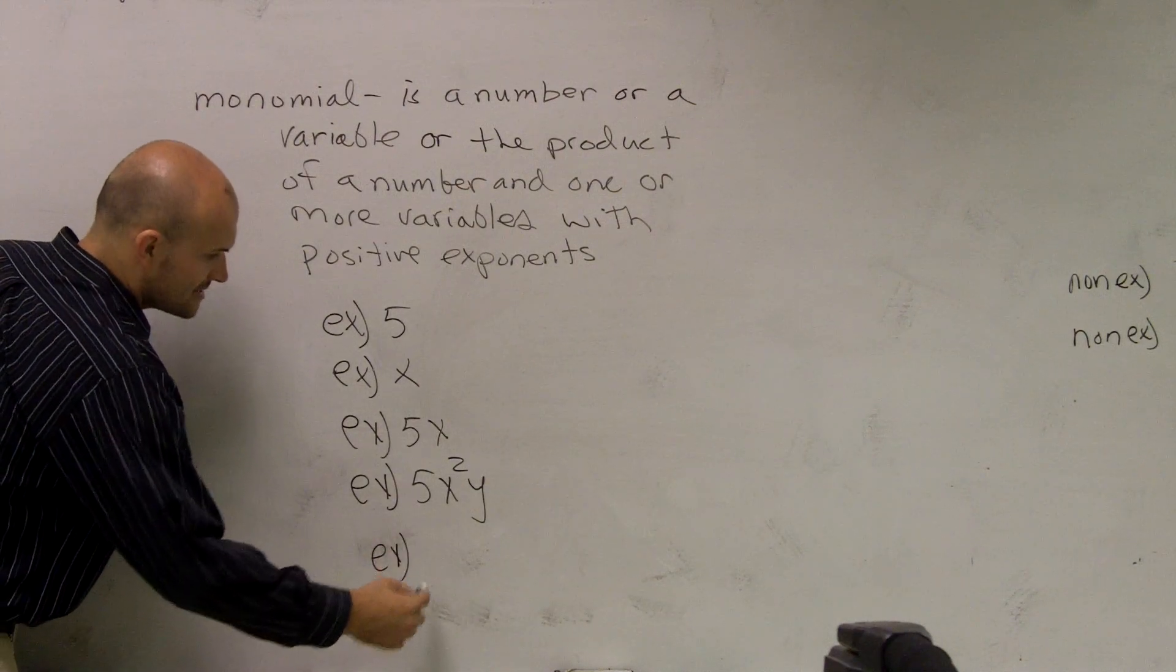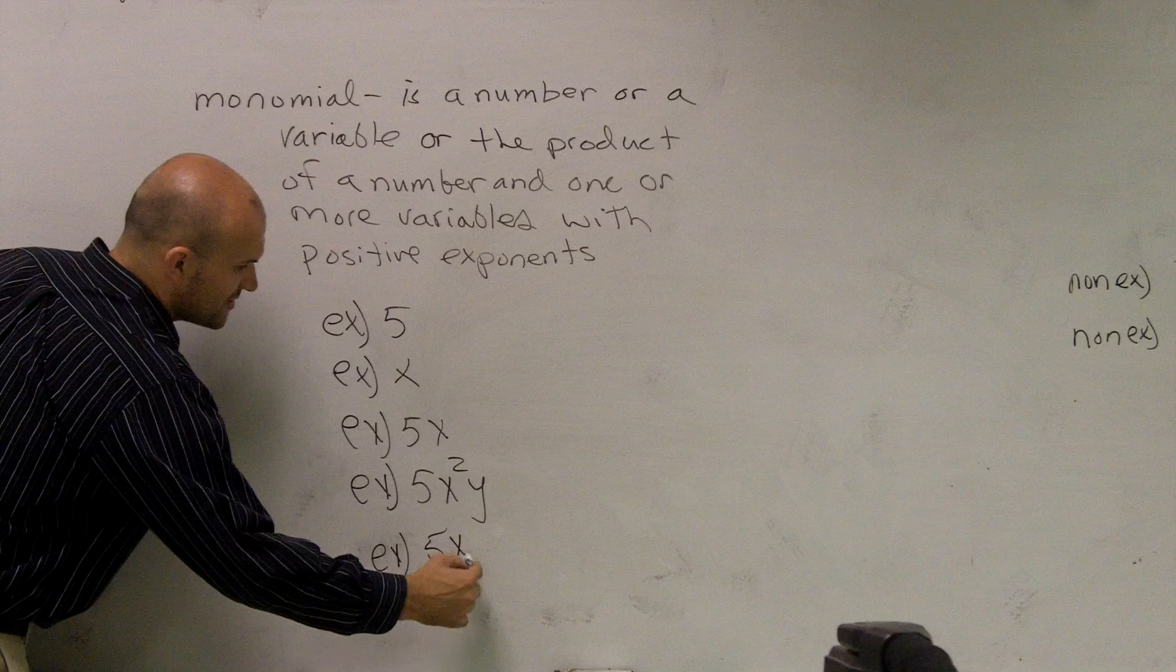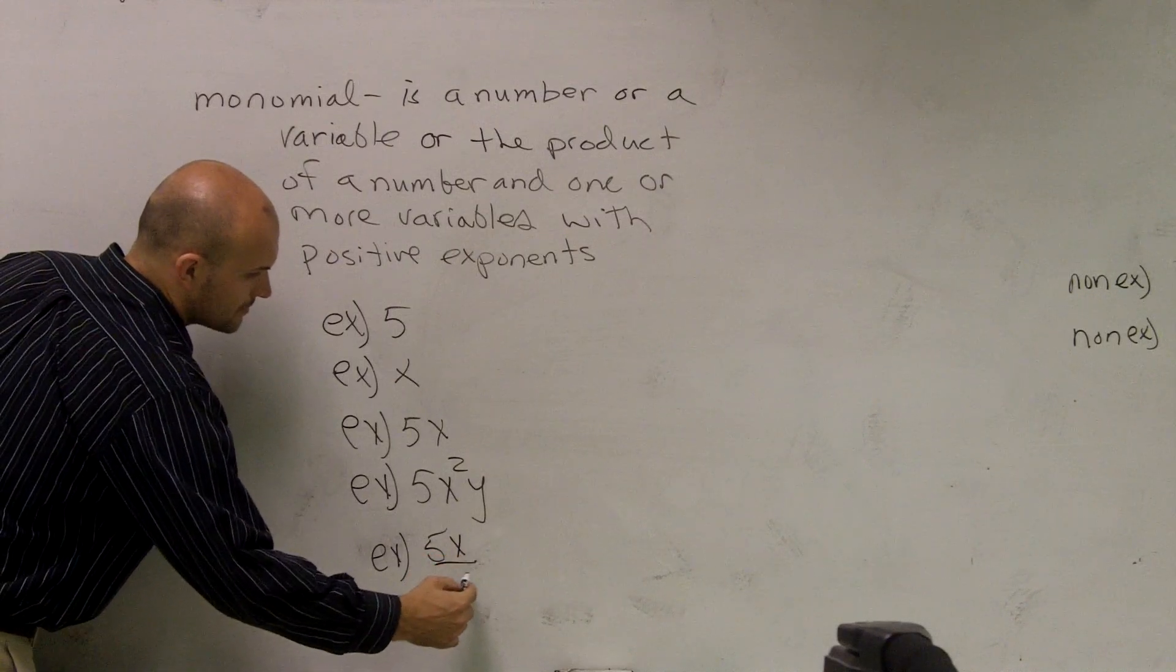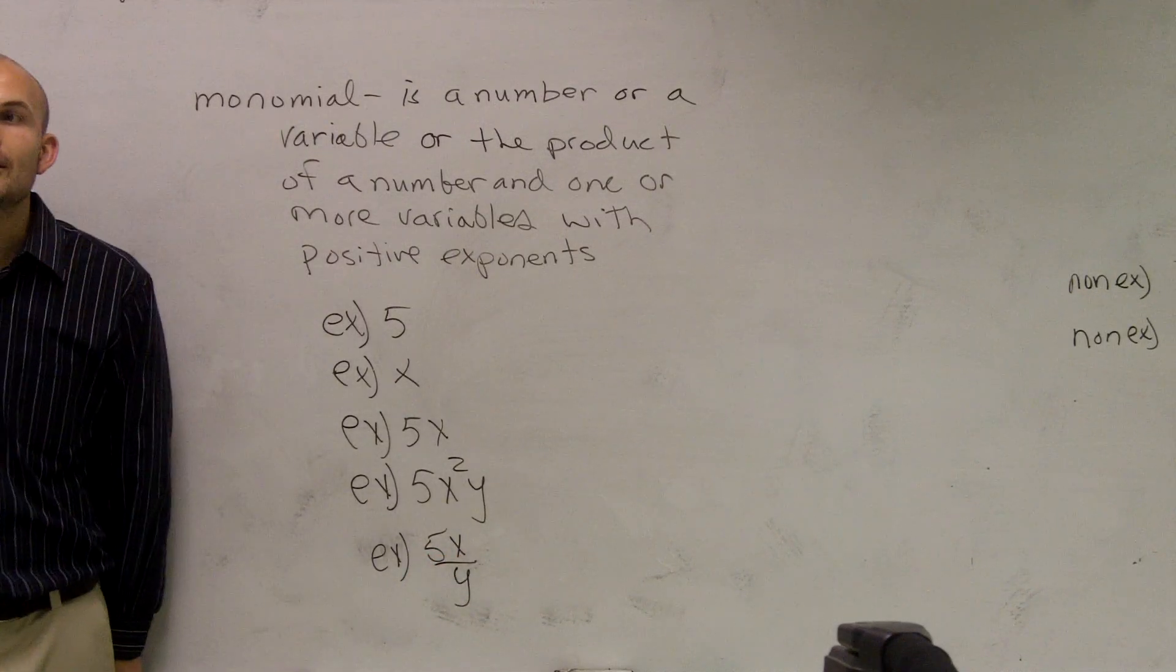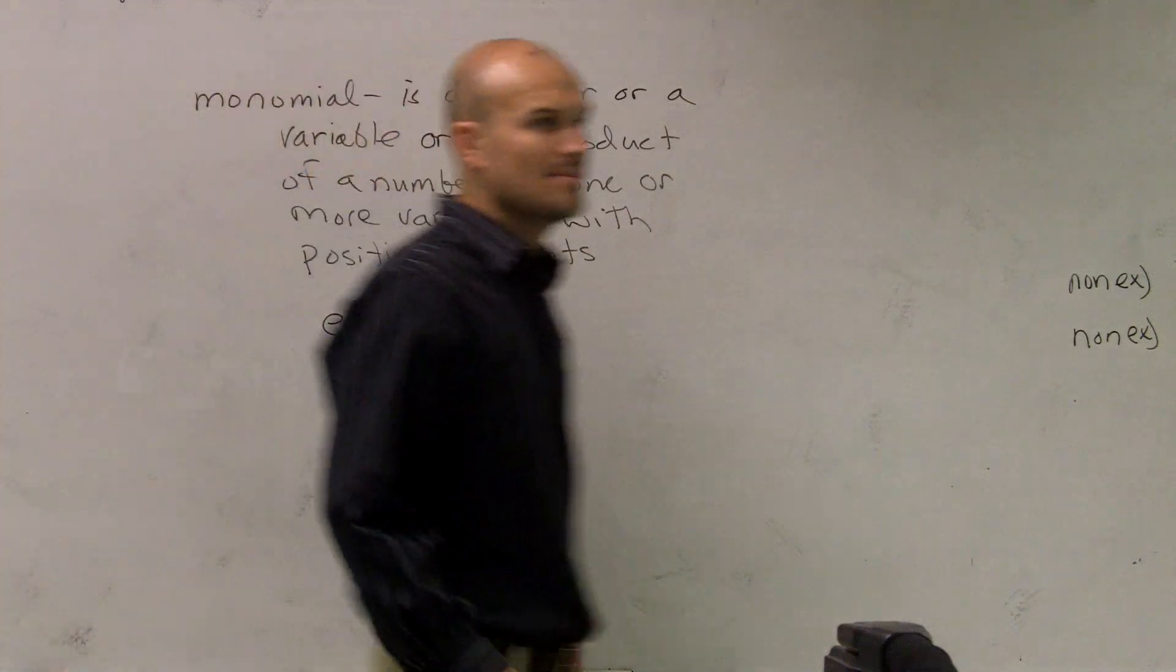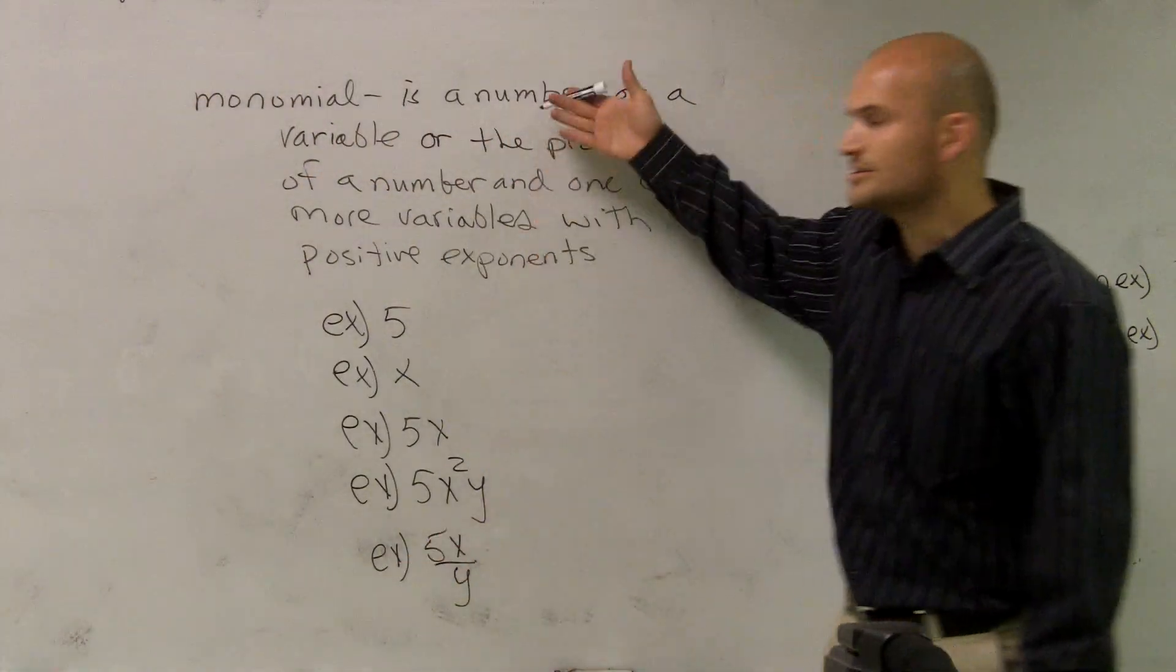Another thing you guys need to understand is, it didn't say anything about division, did it? But this is also a monomial. And why is this going to be a monomial? Because you say, Ms. McCullough, this says division. There's nothing in division.